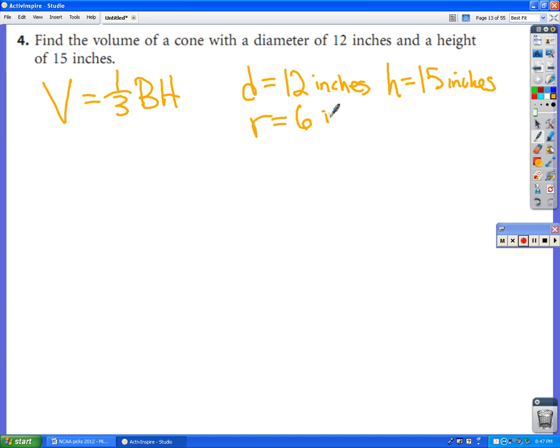But we don't want the diameter to figure out the area of the base. We want the radius, which would be half of that or 6. So the area of the base of a cone is a circle. So that's going to be πr². And since r in this case is 6 inches, that comes out to be 36π. So now to find the volume of this cone, I need to go one-third times the area of the base, which I've just figured out to be 36π times the height, which is 15.